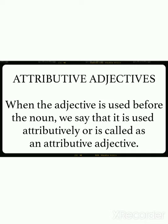The two types are attributive and predicative. Let us learn about the first type — attributive. When the adjective is used before the noun, we say that it is used attributively, or it is called an attributive adjective. Jab koi adjective noun se pehle use ho, usse attributive bhi kaha jata hai aur usse attributive adjective bhi kaha jata hai.